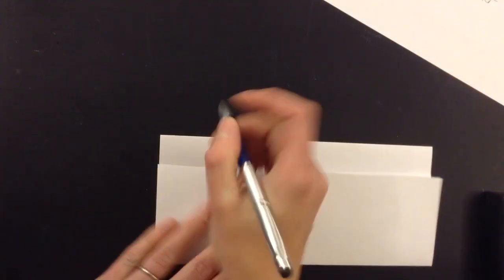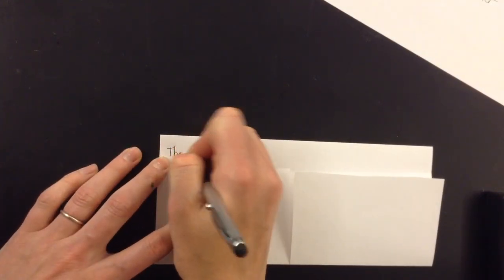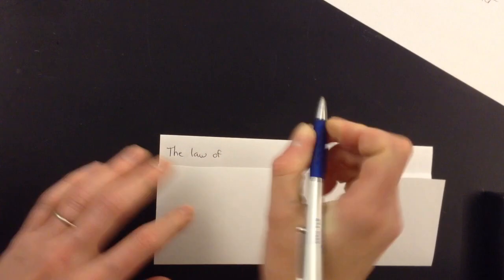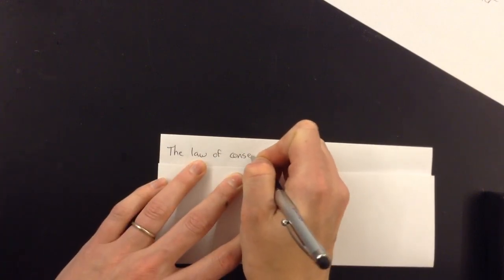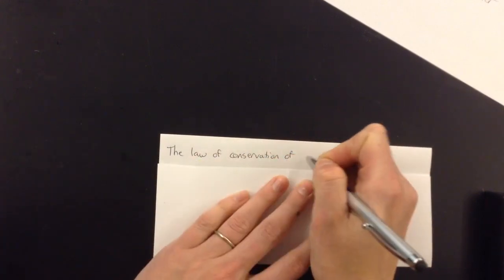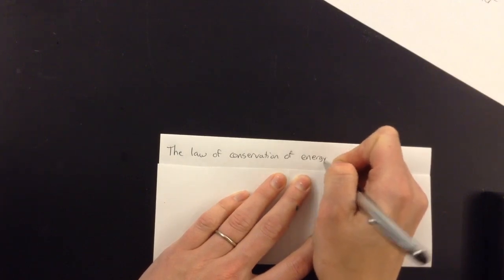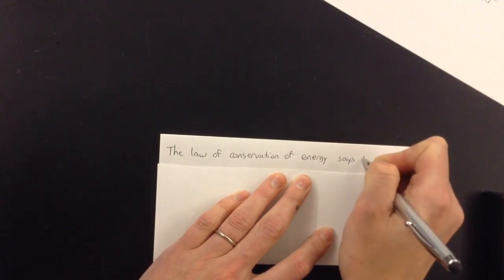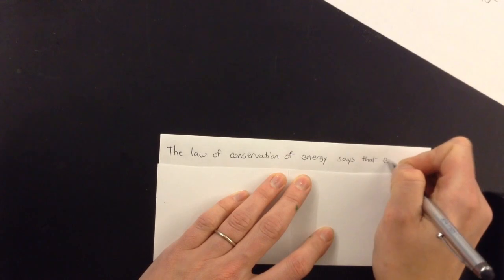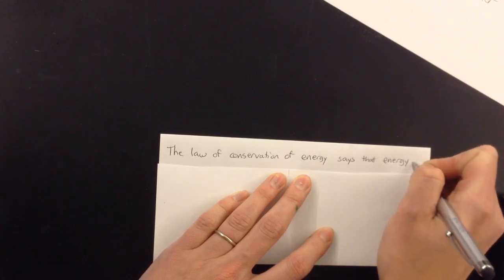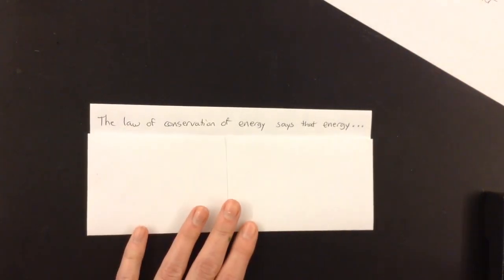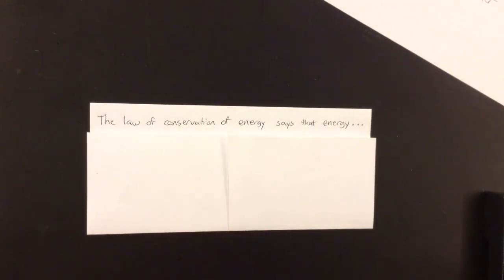Okay, so here's what we're going to write on our foldable. First off, we're talking about the law of conservation of energy, so I'm going to write that across the top here. The law of conservation of energy says that energy, and then I'm going to put dot, dot, dot. I had just enough room there.